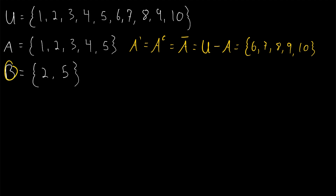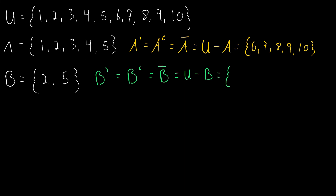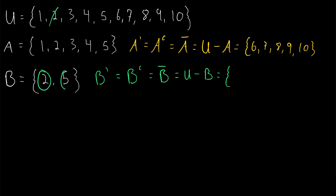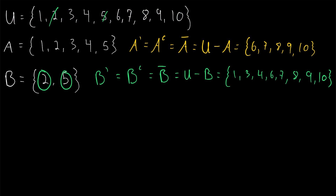How about the next example? What's the absolute complement of B? Again, it can be written as B with an overline, B prime, or B with a C in the superscript. An absolute complement is just a relative complement taken with respect to the universal set — it's the relative complement of B with respect to U. The absolute complement contains all the elements in the universal set except for the ones in B. So we get rid of 2 and 5, and everything else remains as the absolute complement of B.